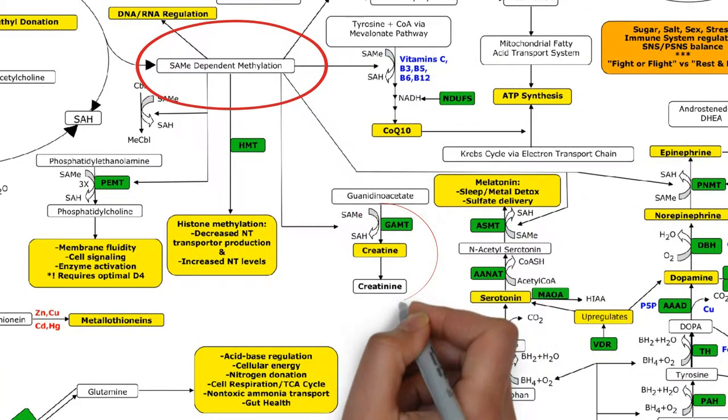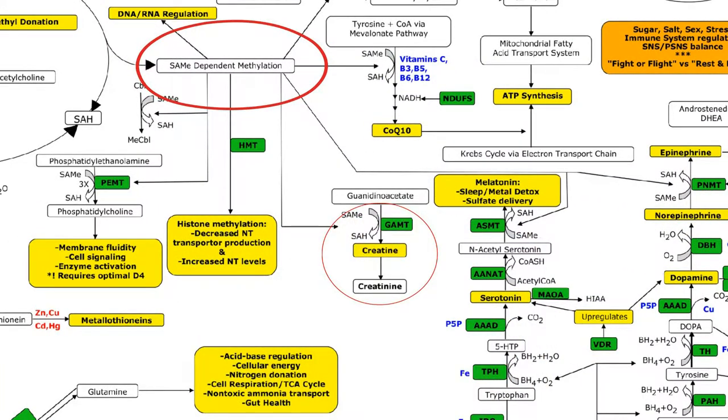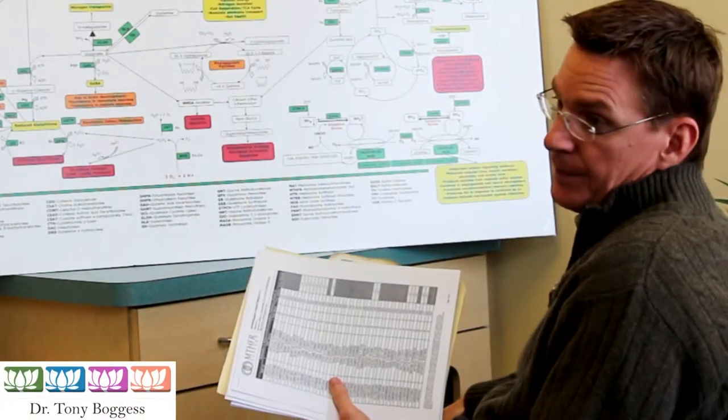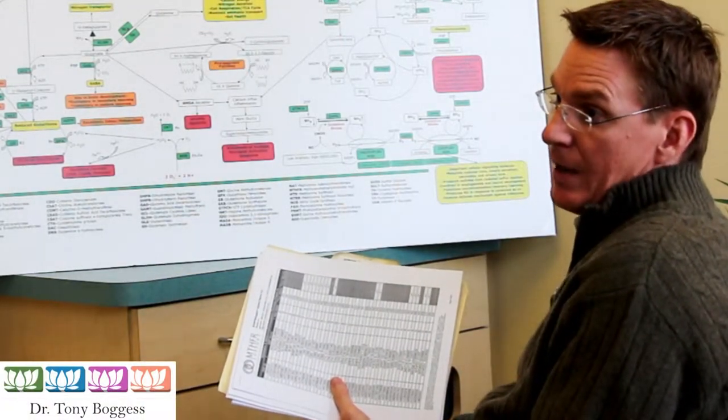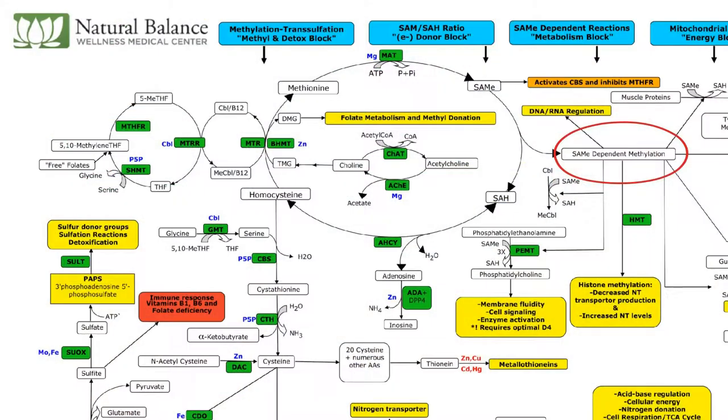In all reality, SAM-dependent methylation, the vast majority of it goes towards the creatine cycle, but it's not without clinical importance that SAM-dependent methylation is the driving factor for neurotransmitter inter-pathway metabolism.